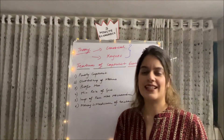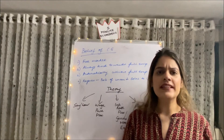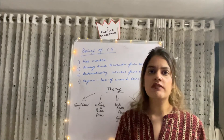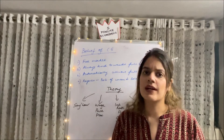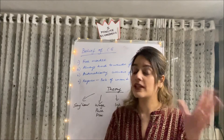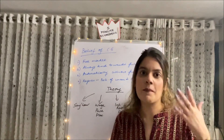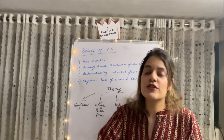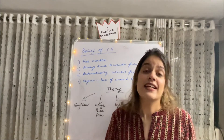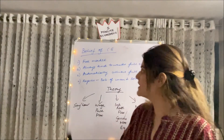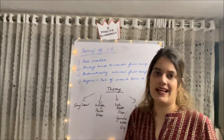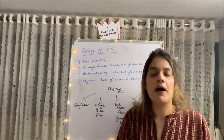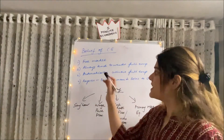Moving to the beliefs of classical economics: their major belief was in the invisible hand and free market mechanism — no government intervention, and everything will come back to normal on its own. The free market is left to itself; demand and supply operate freely with no one forcing outcomes. They were very optimistic people.